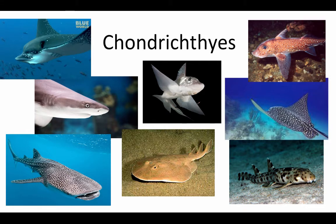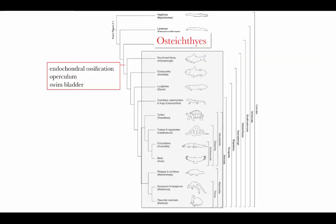So let's first take a look at the Chondrichthyes. Here are some examples of different kinds of sharks and rays, and this is the ratfish — a very interesting-looking organism. These Chondrichthyes are characterized by a cartilaginous skeleton, sometimes calcified cartilage, so it can actually be a very strong but lightweight skeleton. Chondrichthyes tend to control their buoyancy — their ability to rise in the water column — by having very low-density lipids in a very large liver, which helps reduce their tendency to sink.